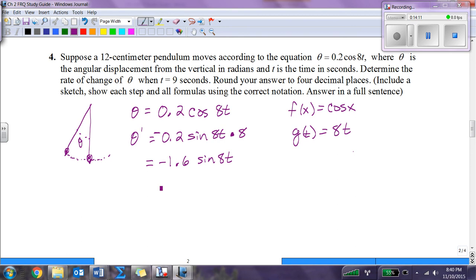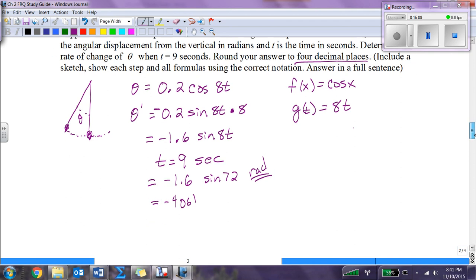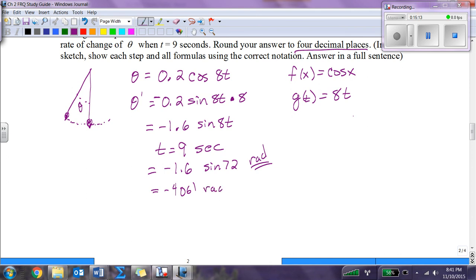Determine the rate of change of theta when t equals 9 seconds. We plug this in and we get negative 1.6 sine 72. Make sure your calculator is in radians. Negative 1.6 sine 72, and it gives me an answer of negative 0.4061 rounded to 4 decimal places. This is radians per second.